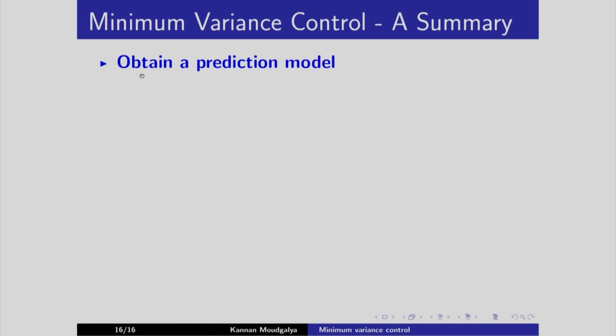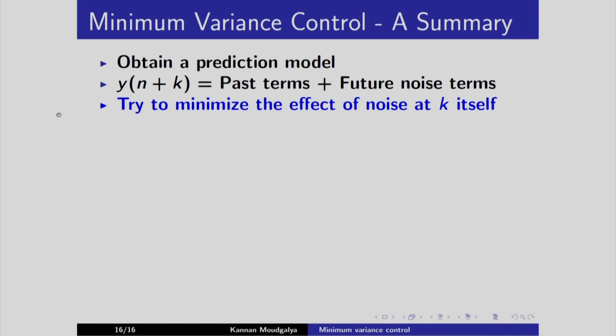To summarize, we need to obtain a prediction model. We write y of n plus k as sum of past terms and future terms. We try to minimize the effect of noise at k itself. We equate future noise term to zero and obtain the controller.